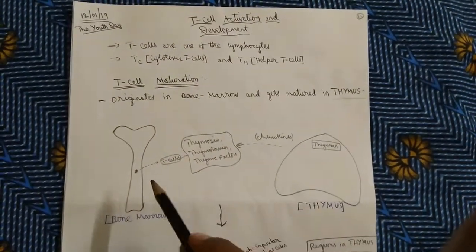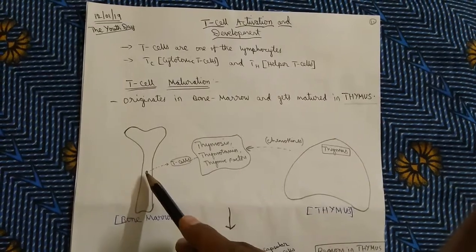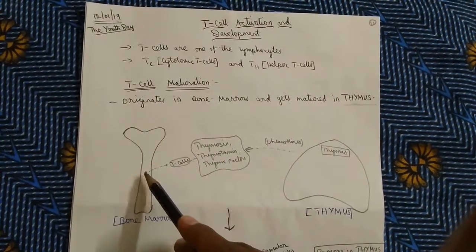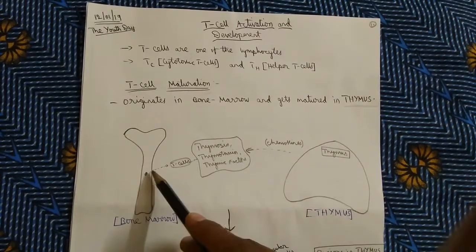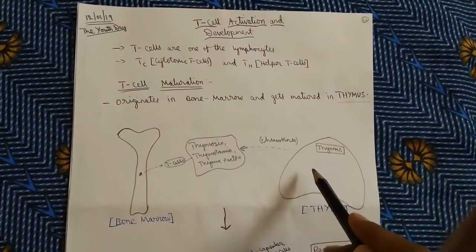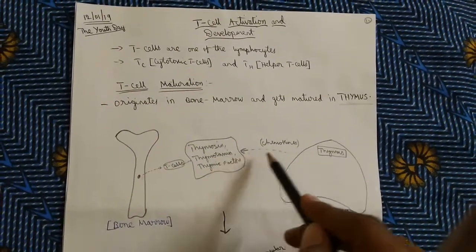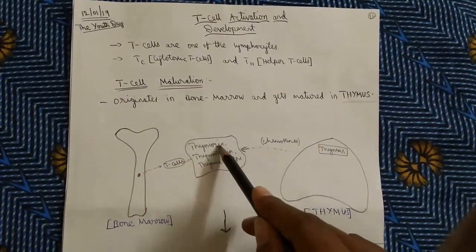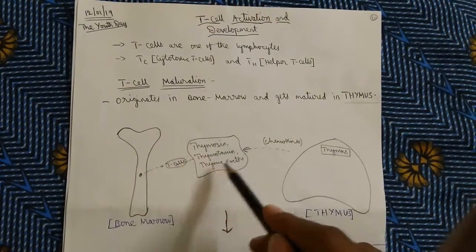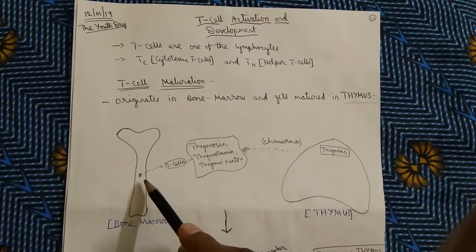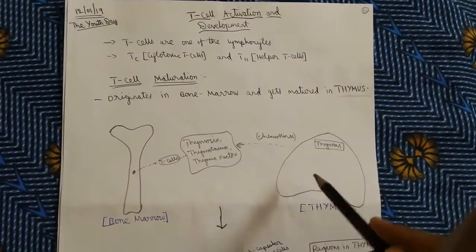In this figure, we can observe a bone marrow, where all blood cells are originated. T-cells are also originated here. This is the thymus — the place of maturation of T-cells. The thymus sends some chemokines, or chemical signals, like thymocin, thymotaxin, and thymic factors. These chemical signals reach the bone marrow and draw the T-cells to the thymus for the purpose of maturation.